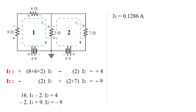The answer is: i1 is equal to 0.1286 A, which is a positive value. i2 is equal to minus 0.9714 A, so i2 is negative.